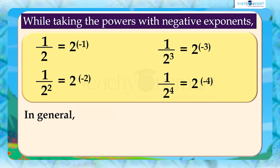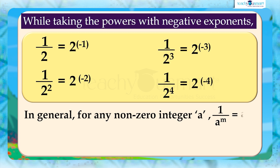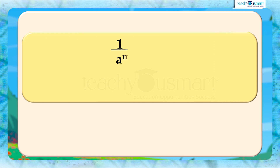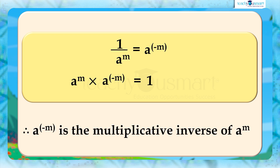So in general, we can say that for any non-zero integer a, 1 by a raised to m equals a raised to minus m, or a raised to minus m equals 1 by a raised to m, where m is a positive integer. By cross-multiplying, we get a raised to m multiplied by a raised to minus m equals 1. So a raised to minus m is the multiplicative inverse of a raised to m, and vice versa.